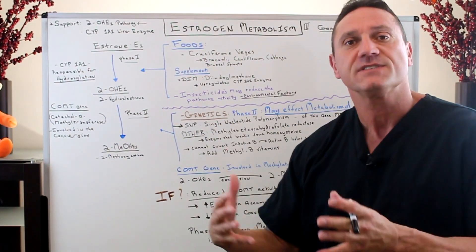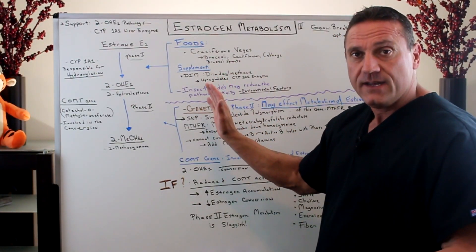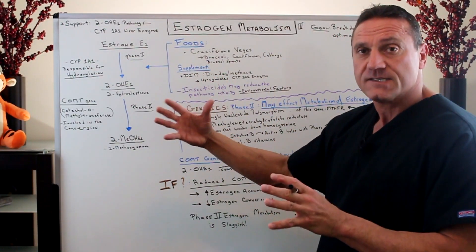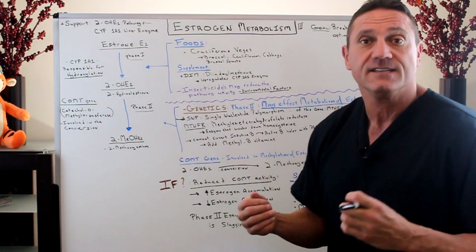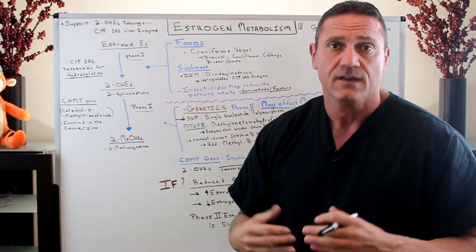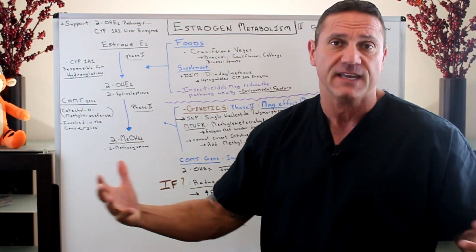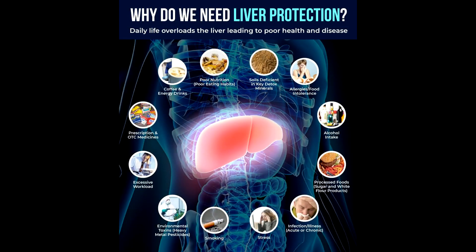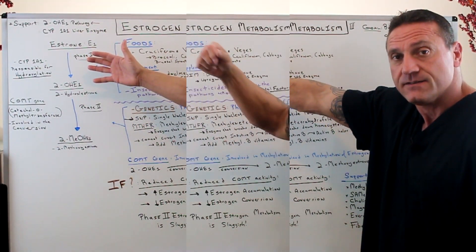This helps the liver. Things that may affect the liver pathway from an outside source include insecticides, pesticides, contaminated water, contaminants, and pollution, because we take in everything from the outside in. If that is being bogged down, it's going to affect this first domino effect of hydroxylation.